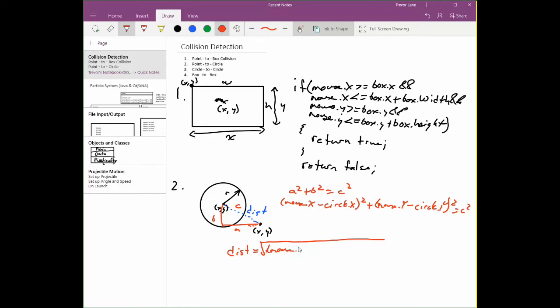Mouse dot x minus circle dot x squared plus mouse dot y minus circle dot y squared.